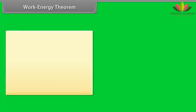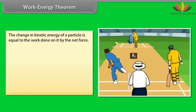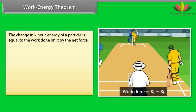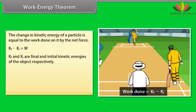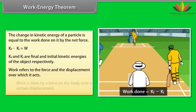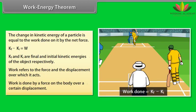Work energy theorem. The change in kinetic energy of a particle is equal to the work done on it by the net force. Kf minus ki is equal to w. Here kf and ki are final and initial kinetic energies of the object respectively. Work refers to the force and the displacement over which it acts. Work is done by a force on the body over a certain displacement.